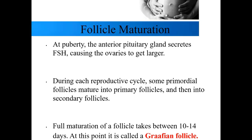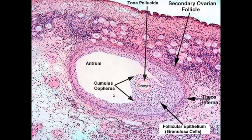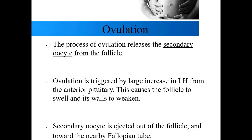At puberty the anterior pituitary gland secretes FSH — follicle stimulating hormone — which causes the ovaries to enlarge. During each reproductive cycle, some primordial follicles mature into primary follicles, which mature into secondary follicles. Full maturation of a follicle takes between 10 to 14 days, at which point it is called the Graafian follicle. Here we have an image of a Graafian follicle with the secondary oocyte visible inside.